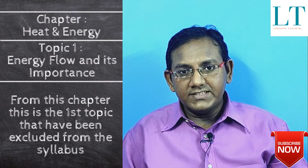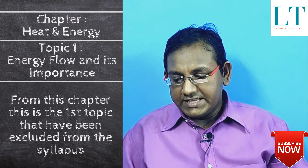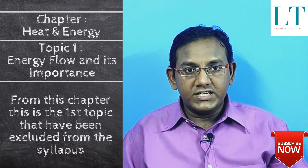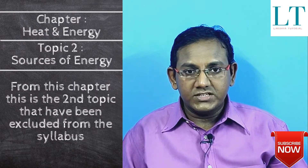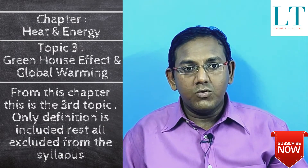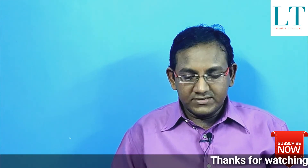The next chapter is chapter number six — Heat and Energy — and there are major changes here. The energy flow and its importance are all excluded from your syllabus, meaning no need to study those topics anymore. The energy sources — what are the different kinds of energy sources — those topics are also excluded. And in greenhouse effect and global warming, you just need to study only the definition; the rest is excluded. So a major chunk of the Heat and Energy chapter has been excluded from this syllabus.